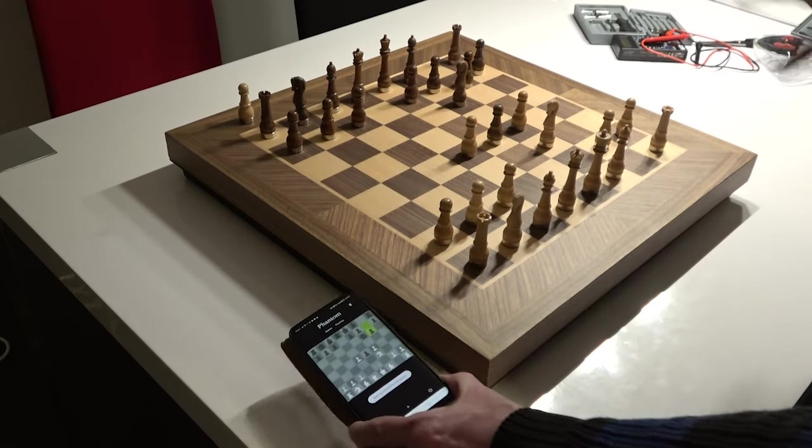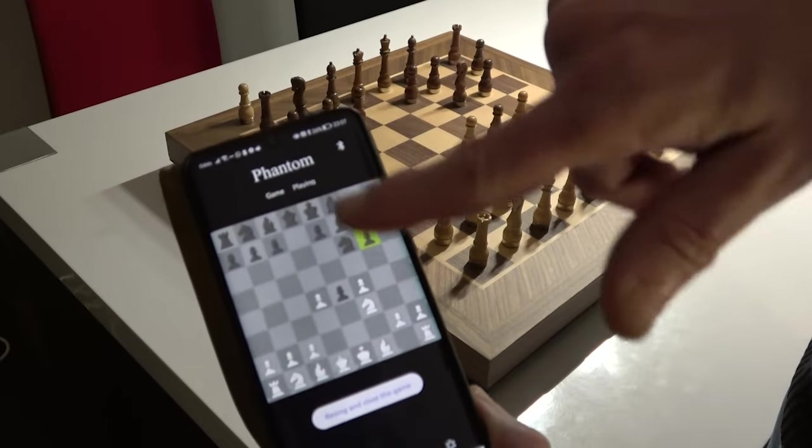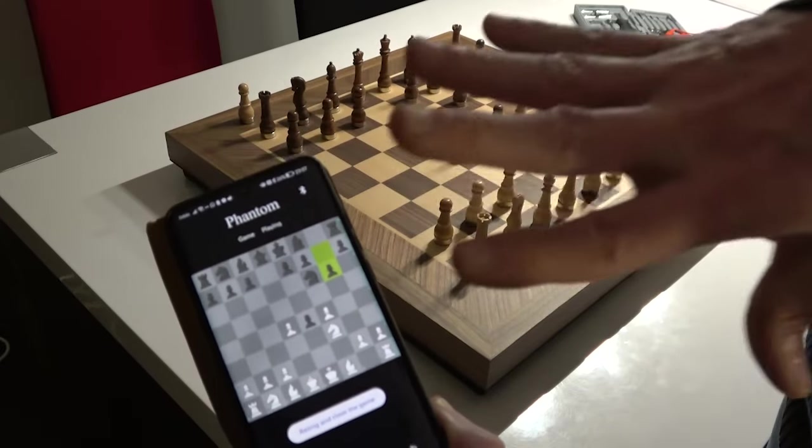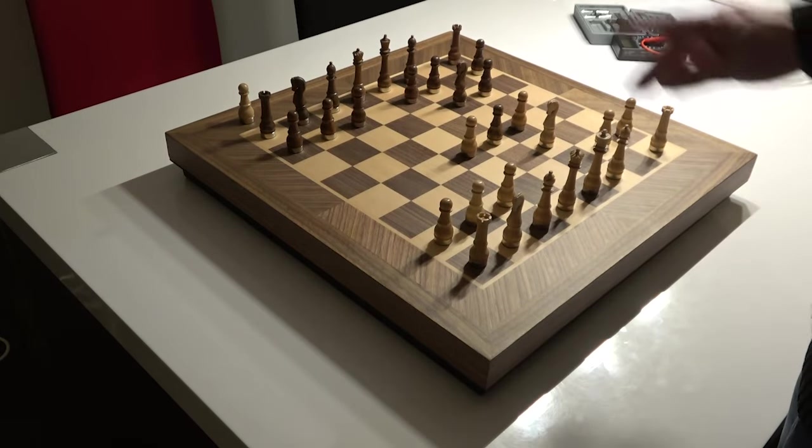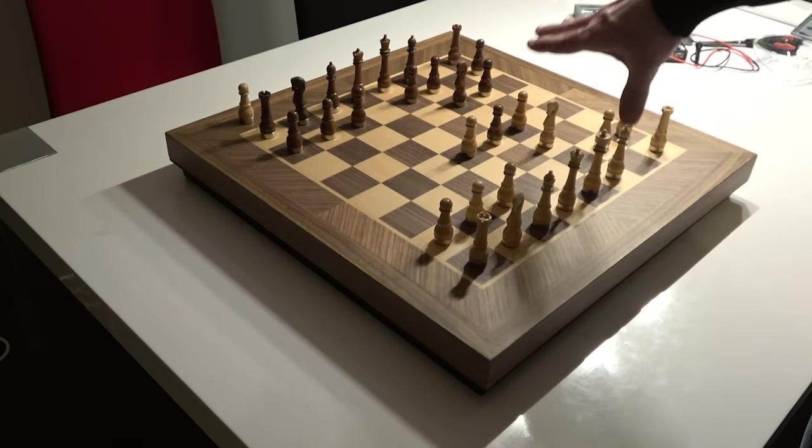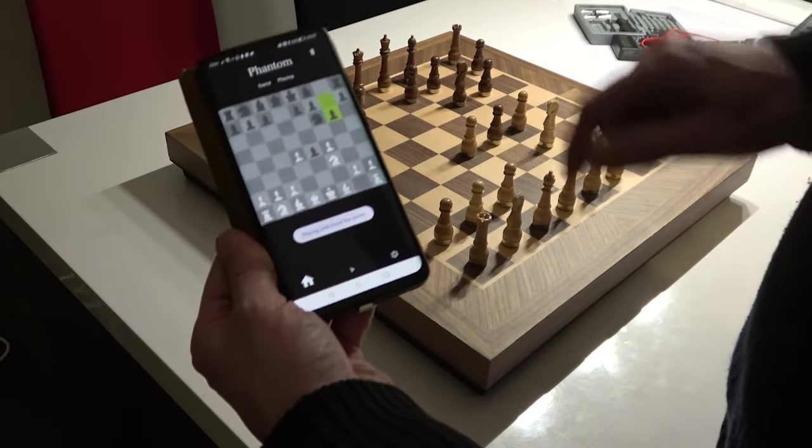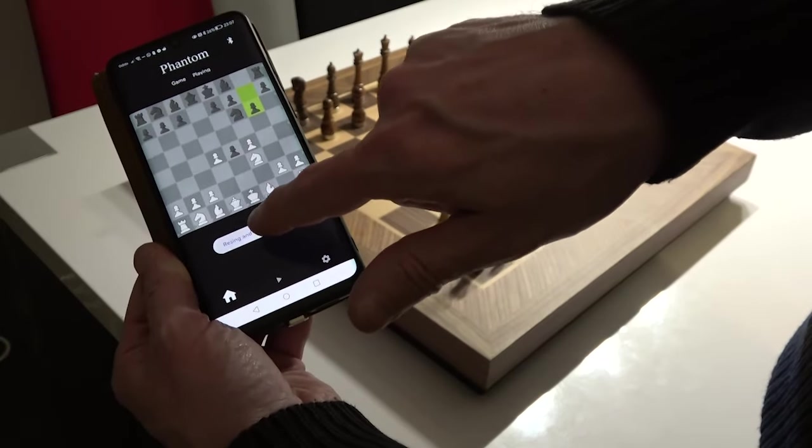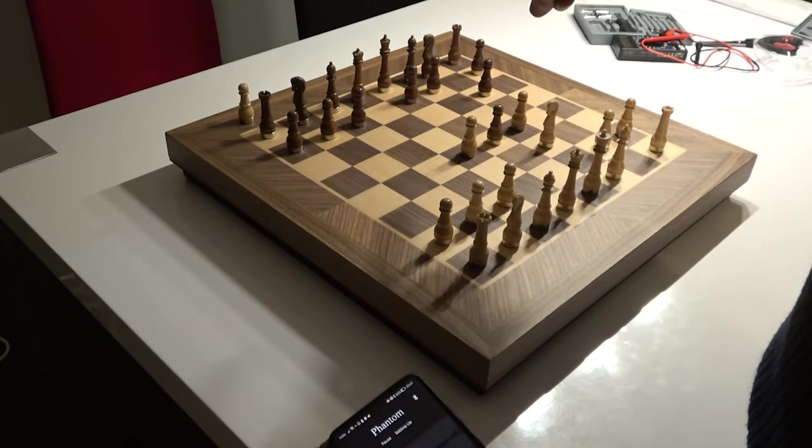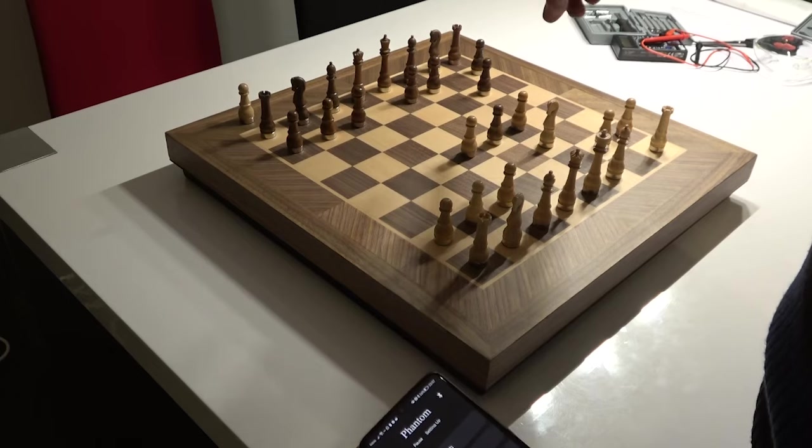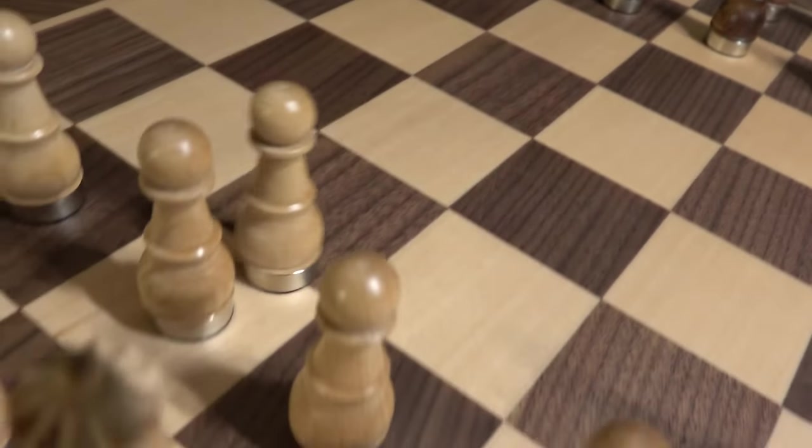And as you can see, everything that's happening on the board is happening in the app as well. But like I said, you don't need the app. You can put this away. You can just play an old fashioned game of chess. Now, let's say I don't want to continue this game. I want to start over. So what I'm going to do is I'm going to say close the game. And as you can see, the Phantom board will now reset all the pieces to the beginning stage for a new game.